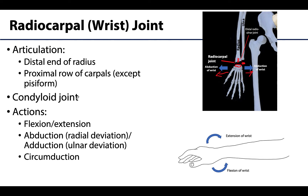Anytime a joint can flex, abduct, extend, and adduct, it can also circumduct. So you do have circumduction at the wrist — moving the wrist and hand in a circular motion.